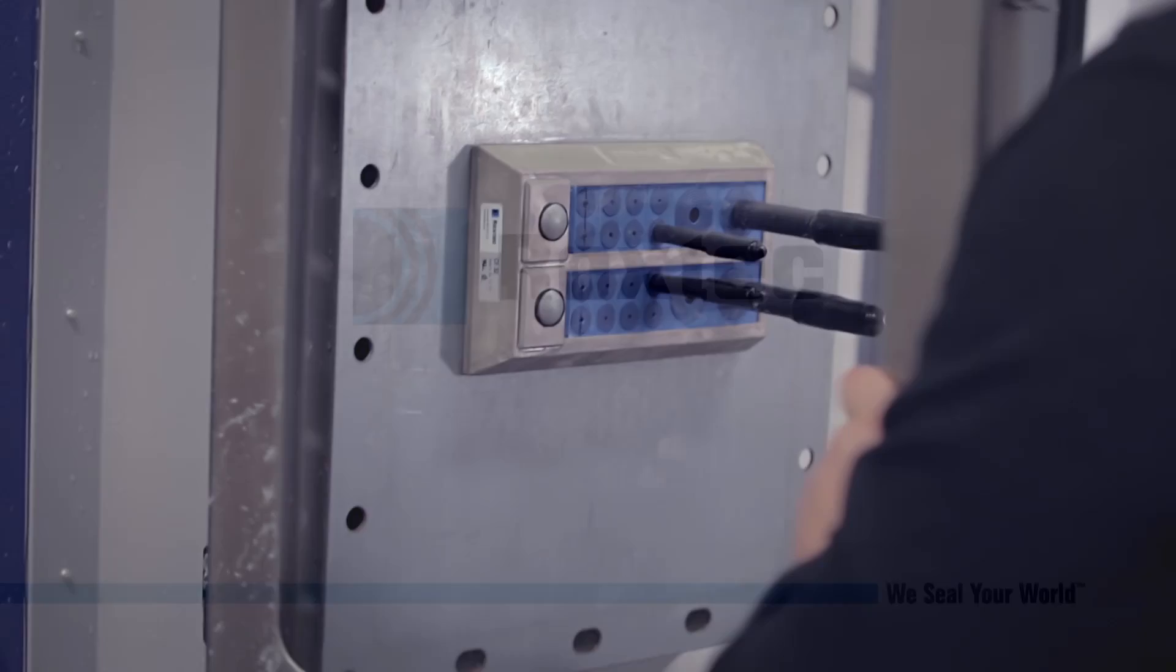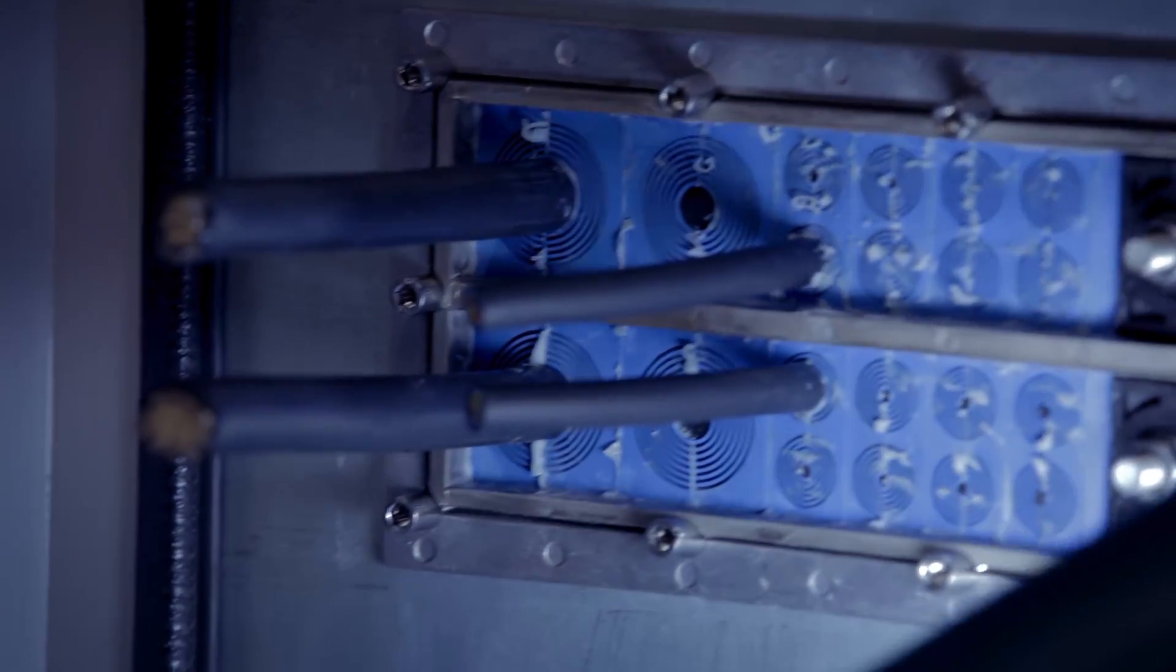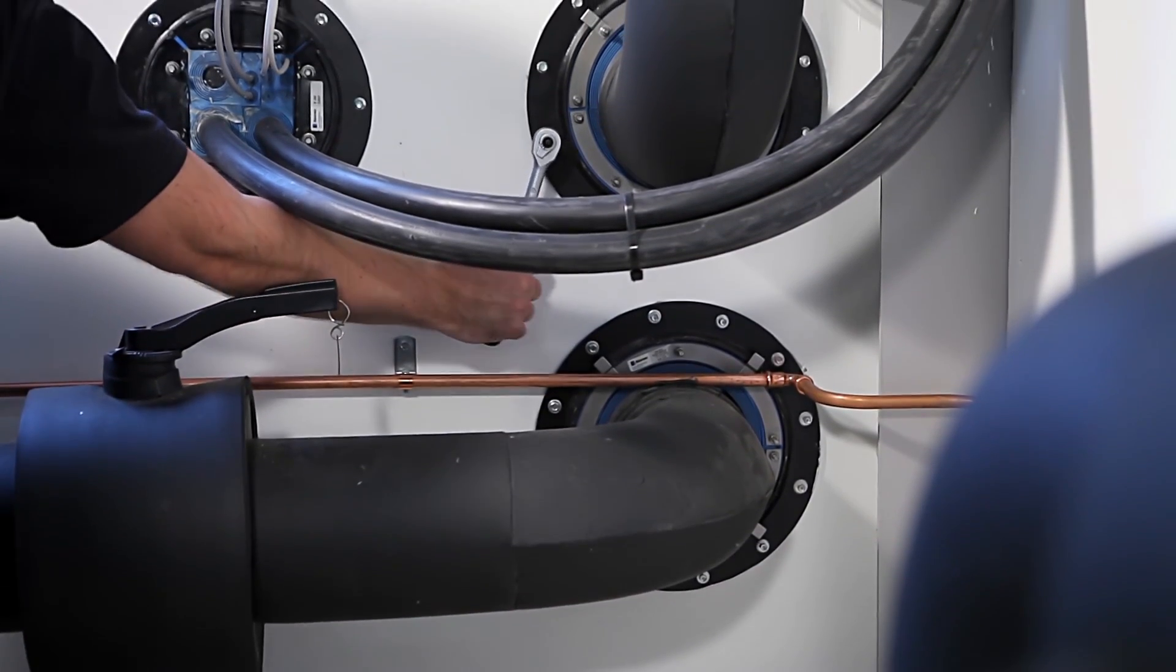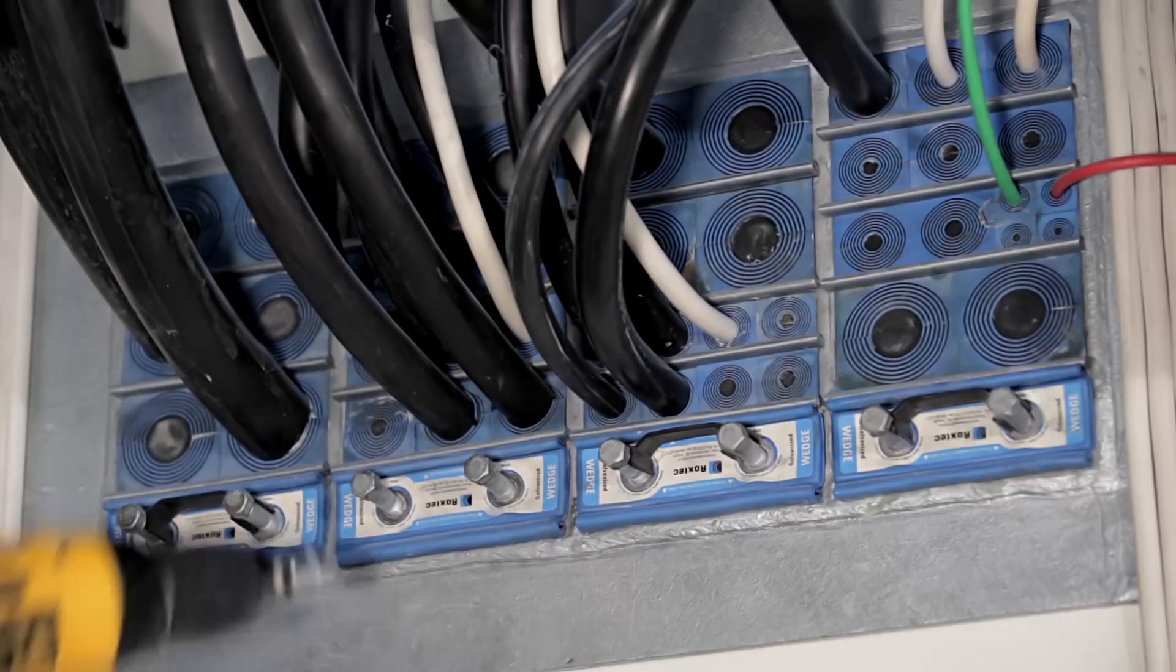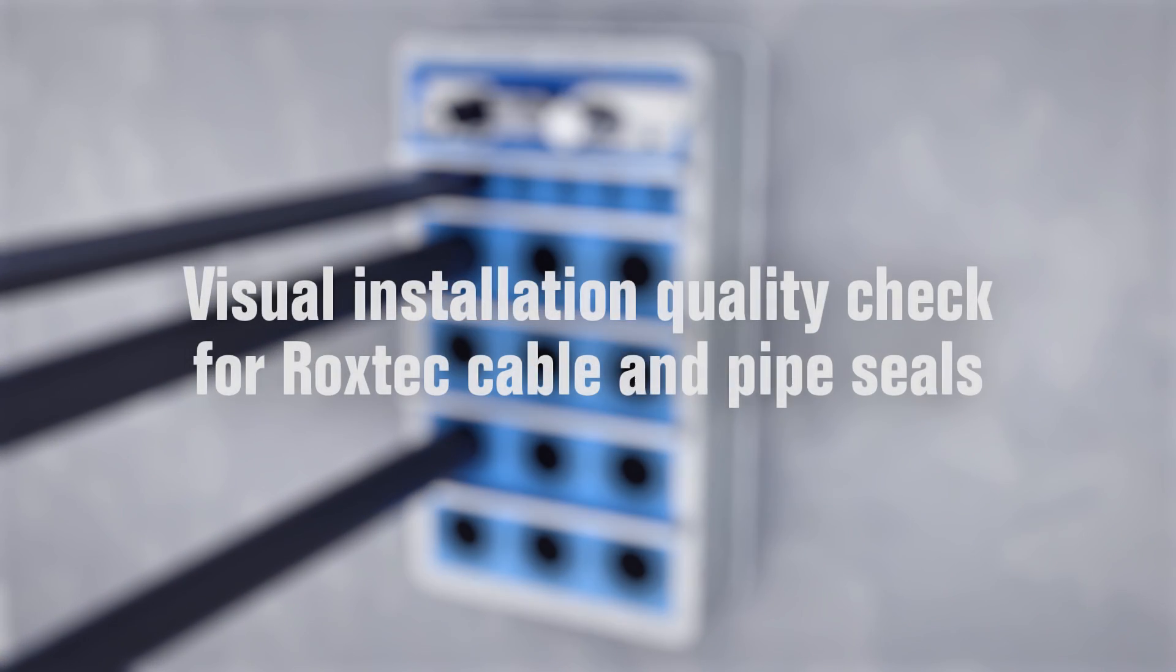Roxtec cable and pipe transits are safety products. The seals are tested and certified according to official standards and must be installed in the correct way. Otherwise, your project may fail to meet regulations and you risk putting assets and even lives in danger. In order to ensure safety, you can do a simple visual installation quality check of the sealing system.